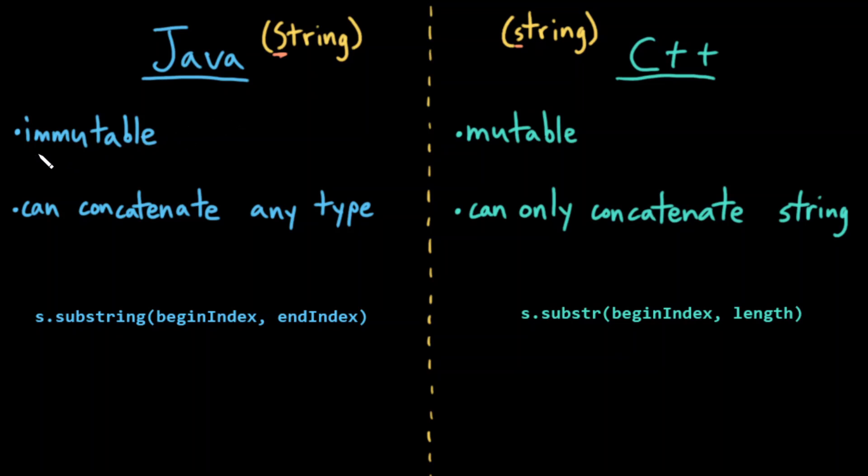In Java, strings are immutable. The moment you create them, they cannot ever be modified. You can only change a string variable by creating a brand new string object and reassigning. In C++, strings are actually mutable. You can modify strings.